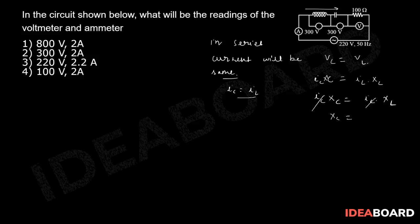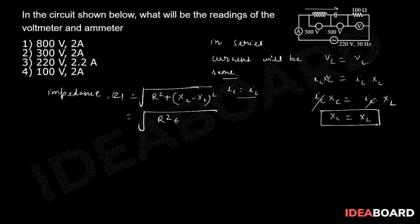So XC equals XL—we get the condition. From there we can find out the impedance. Impedance mod Z will be square root of R squared plus (XL minus XC) squared. Now here XL and XC are equal, so this will be zero. Zero squared gives you the resistance.